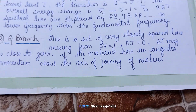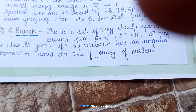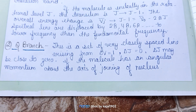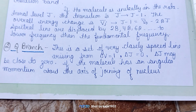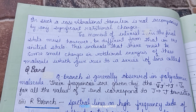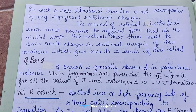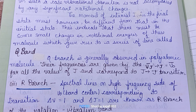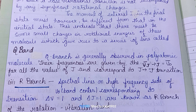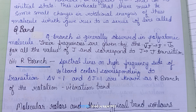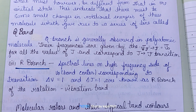The Q branch is a set of very closely spaced lines arising from Δv = 1 and ΔJ = 0, when the angular momentum about the axis joining the nuclei is zero. In such cases, a vibrational transition is not accompanied by significant rotational change. However, the moment of inertia in the final state must be different from that in the initial state, indicating some small change in rotational energy, which gives rise to the Q branch lines.